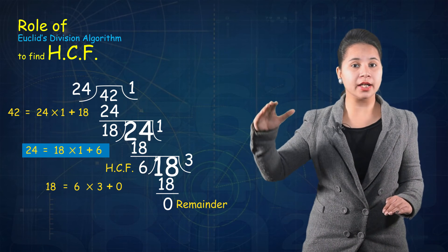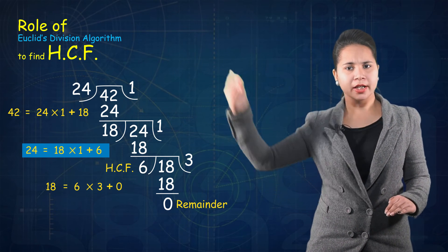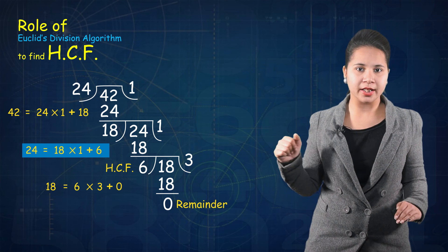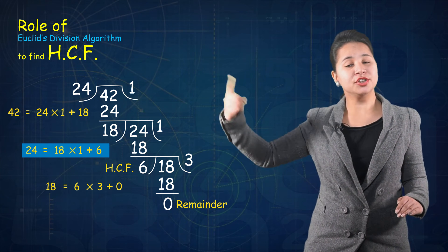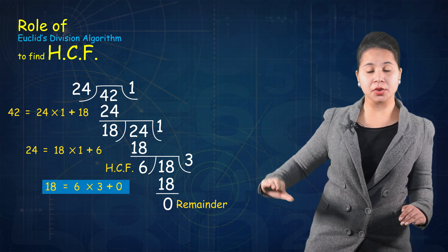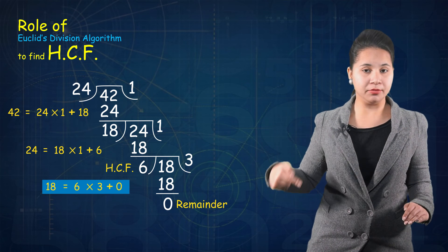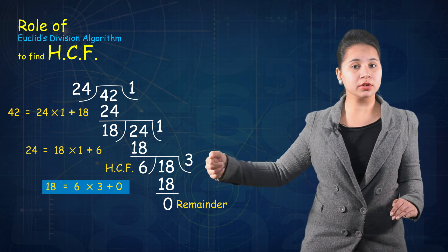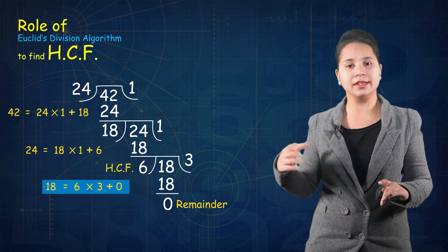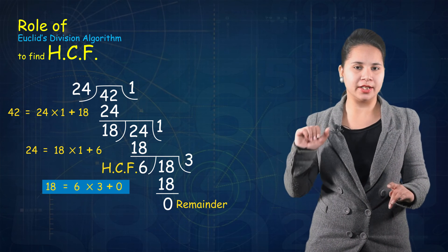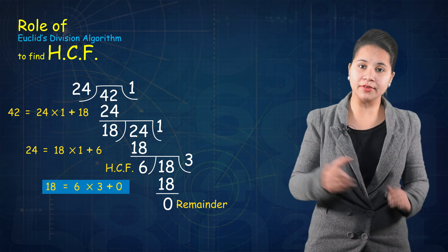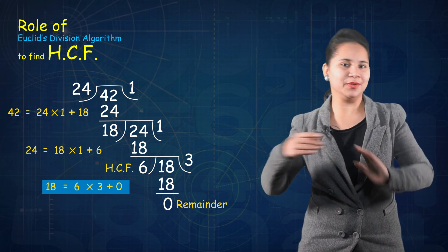The remainder becomes the new divisor, and the divisor becomes the new dividend. Since the remainder was not 0, we continued the division process. In the third step: 18 = 6 × 3 + 0. Here 18 is the dividend and 6 is the divisor, 3 is the quotient and 0 is the remainder. The rule is: when the remainder becomes 0, the divisor becomes the HCF. So 6 is the HCF. In this way, by verifying Euclid division lemma step by step, we found the HCF using Euclid division algorithm.